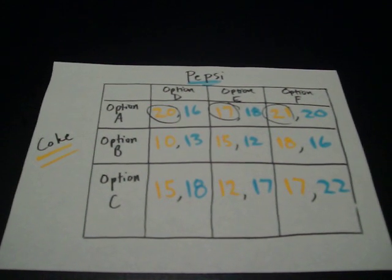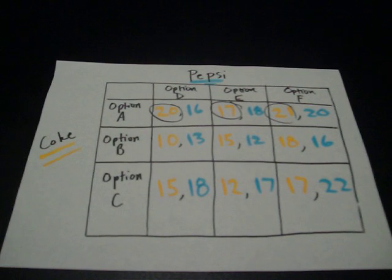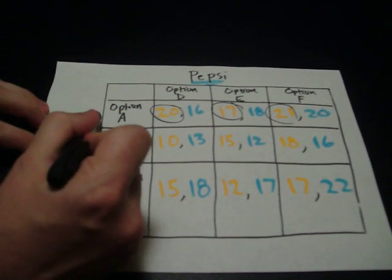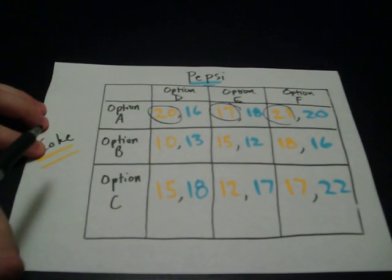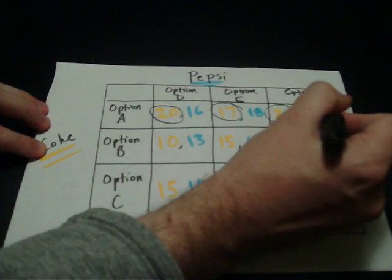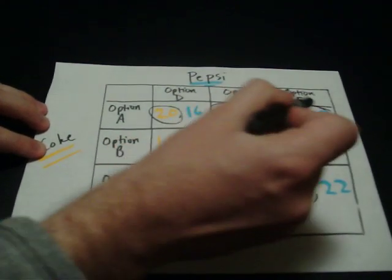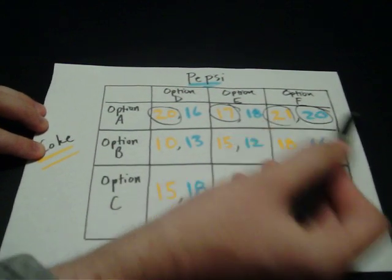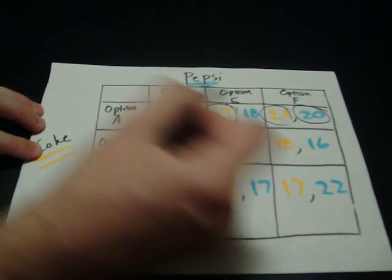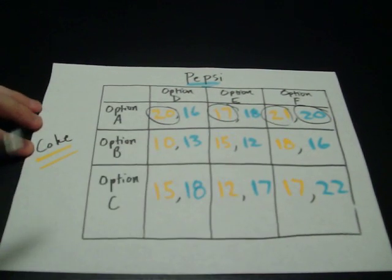Now let's put ourselves from the perspective of Pepsi. If Pepsi thought that Coke was going to pick option A and come along this column, Pepsi would want to pick option F in response to that, because if they pick option F, they get $20 million. If they pick option E, they would have only gotten $18 million. If they pick option D, they would have only gotten $16 million.